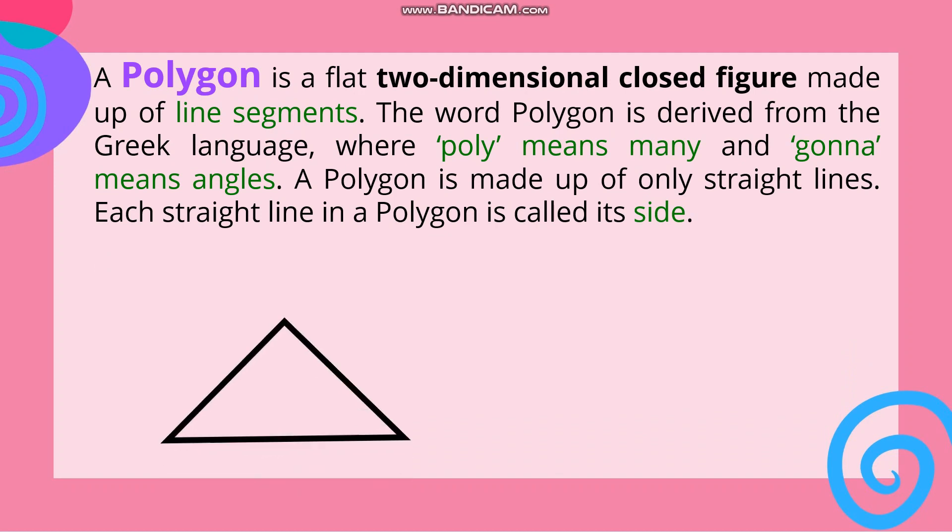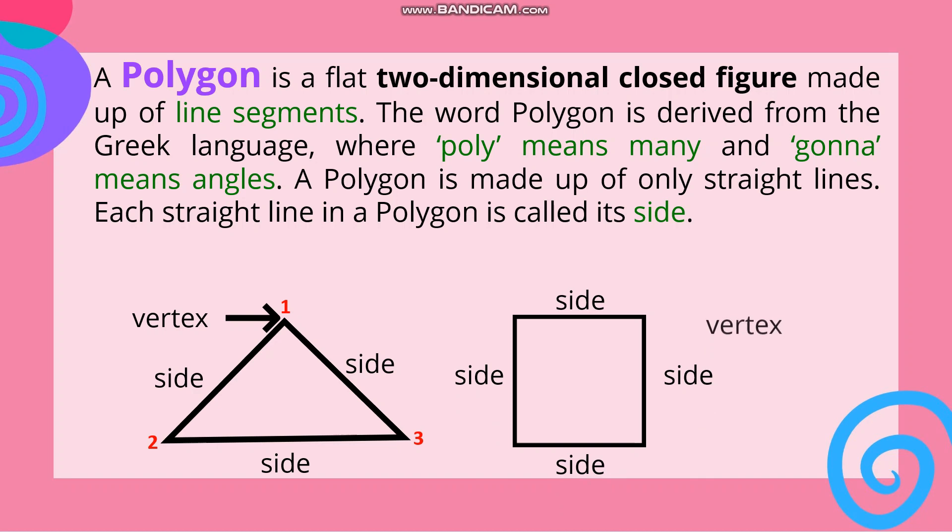Example of polygon: We have the triangle. We have side 1, side 2, and side 3. And this is the vertex. So we have 1, 2, and 3 vertices. Another example is the square. We have side 1, side 2, side 3, and side 4. And we have also the vertex. We have 1, 2, 3, and 4 vertices.